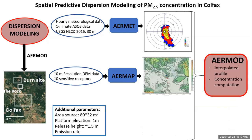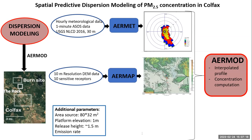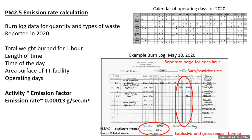We also incorporated additional parameters, including emission rate. To calculate the emission rate, I used specifically the burn log data for quantity and types of waste reported in 2020. Using the mass burn and emission factor for each type of waste, along with the operating days, the time of burning, and the area surface of the facility, that allowed me to estimate an emission rate of about 130 micrograms per second per square meter.